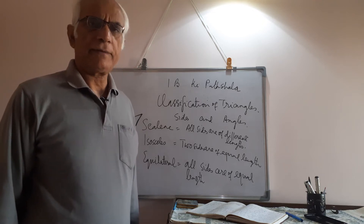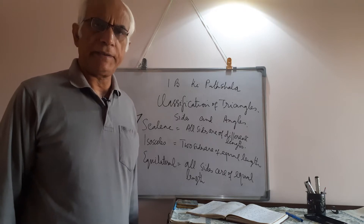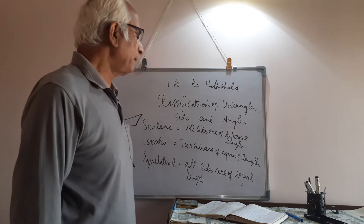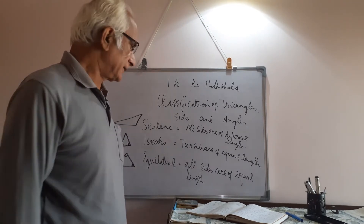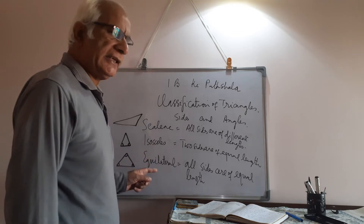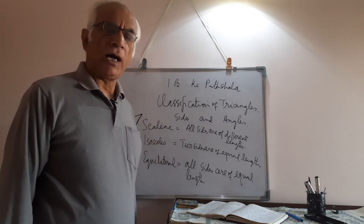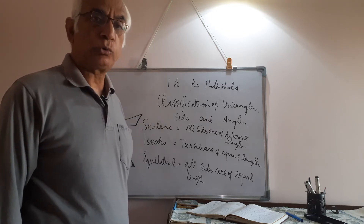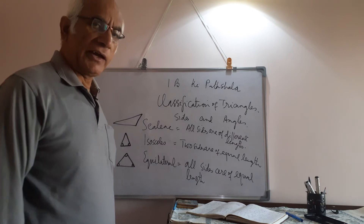We can classify triangles on the basis of the lengths of their sides and the measures of their angles. If we classify them on the basis of the sides, we have three types of triangles: scalene, isosceles, and equilateral. A scalene triangle is a triangle in which all three sides are of different lengths — no two sides are equal.